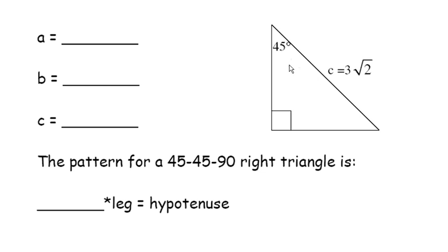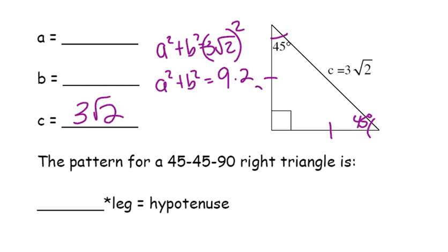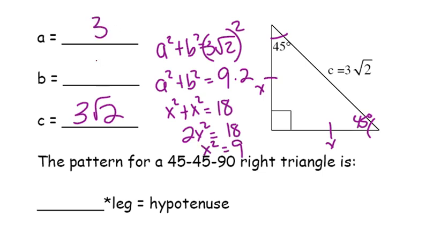One more triangle. In this case, C is 3 radical 2, and we need to know what A and B are. All these triangles that we've been doing so far have been 45 degrees. If that one's 45, then this one must also be 45. So if my base angles are congruent, then the sides opposite them are congruent — these are isosceles triangles. So whatever A is, B is also, which means A squared plus B squared equals 3 radical 2, quantity squared. So A squared plus B squared equals 9 times 2. These are really both X, so we get X squared plus X squared equals 18. 2X squared equals 18, which means X squared equals 9, and each of these therefore must equal 3.